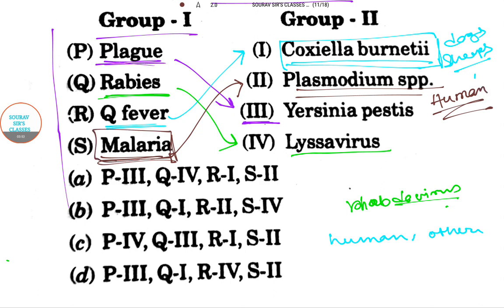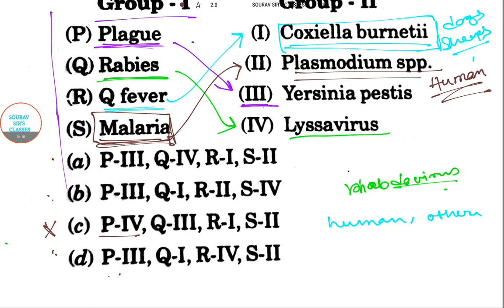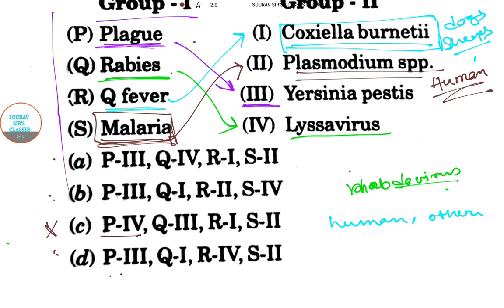So we have all the answers: P with III. Now we have three possible answers. Q with IV - we have one Q with IV.